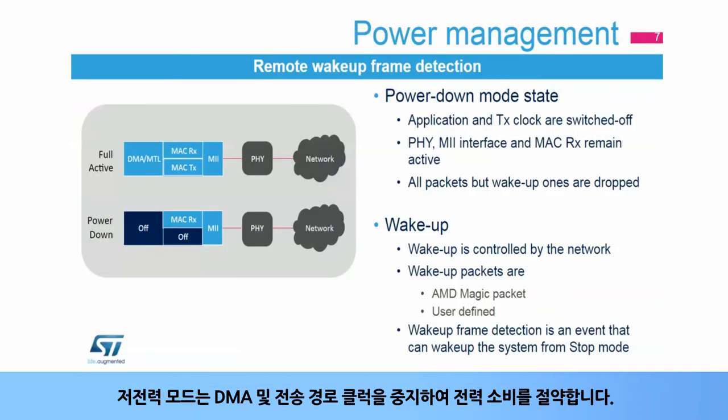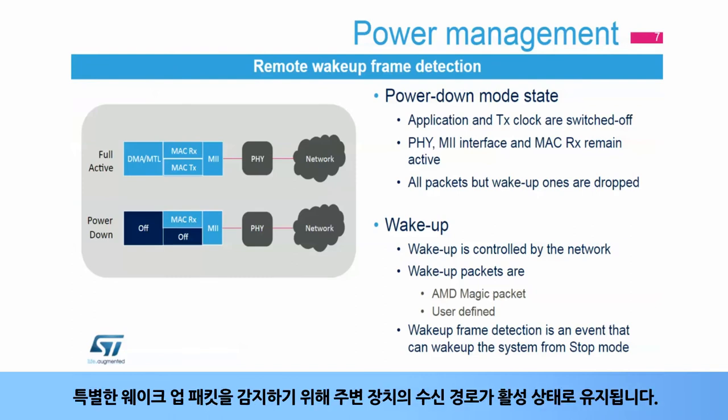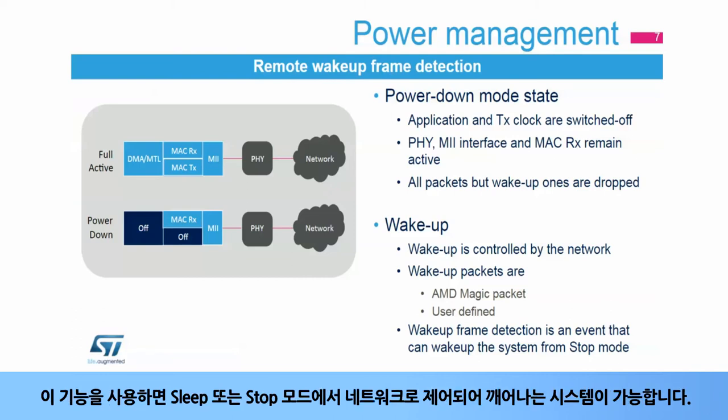A functional low-power mode enables power consumption saving by stopping the DMA and transmit path clocks. The received path of the peripheral remains active in order to detect special wake-up packets. This feature enables a system wake-up from sleep or stop mode controlled by the network.